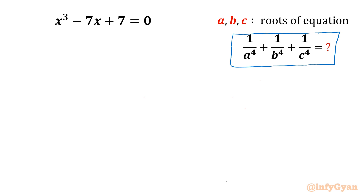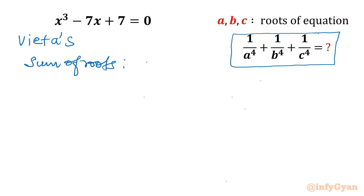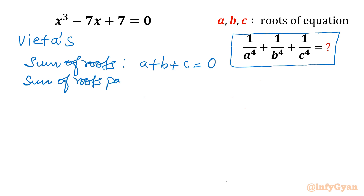I will begin by writing three equations from Vieta's method. If a, b, c are the roots of this cubic equation, then the sum of roots a + b + c equals the negative coefficient of x² over the coefficient of x³. There is no x² term, so this is 0. The pairwise sum ab + bc + ca equals the coefficient of x over the coefficient of x³, which gives minus 7.